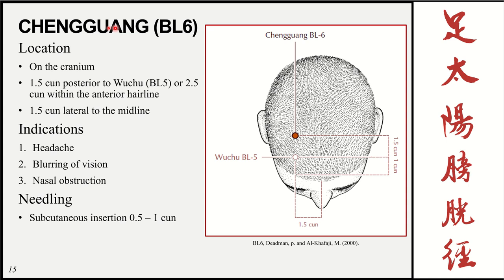Bladder 6, Chengguang, is also on the cranium, 1.5 cun posterior to bladder 5. I find it by going 2.5 cun posterior from the anterior hairline using the method described earlier. Functions are very similar: headache, blurring of vision, and nasal obstruction. Insertion is subcutaneous again, 0.5 to 1 cun.